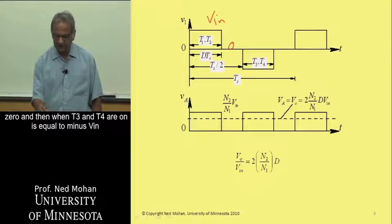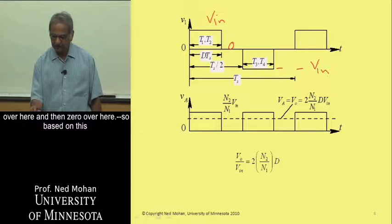and then when T3 and T4 are on, this is equal to minus VN over here, and then 0 over here.